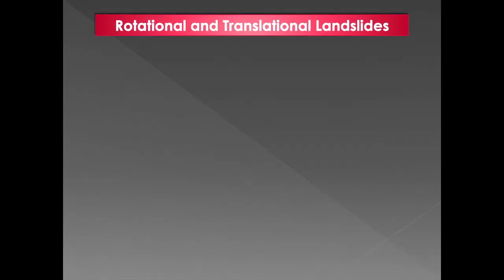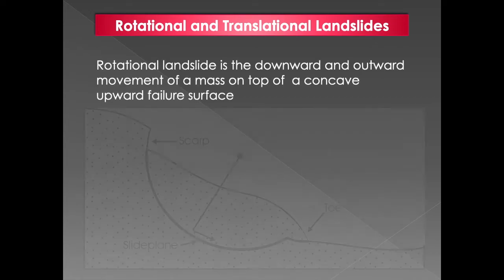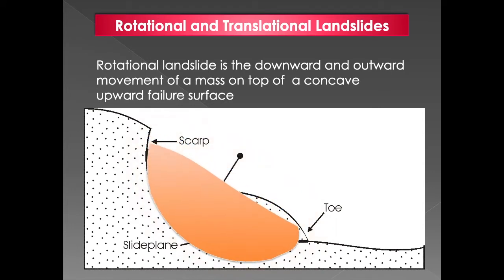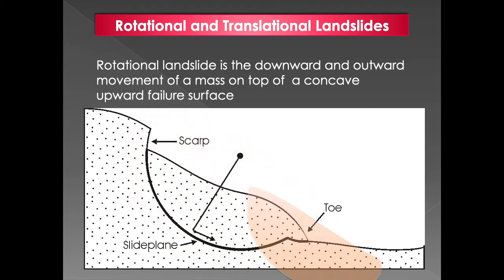Now let's look at the different kinds of landslides. We get rotational and translational landslides. Looking at the rotational landslide: it's a downward movement. You can see in the animation it slumps down and then pushes forward, producing a concave movement. It's a sinking and then pushing forward as that material has to make way for the increased material.